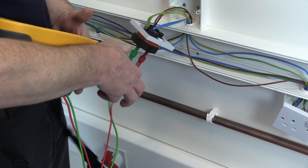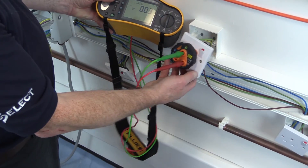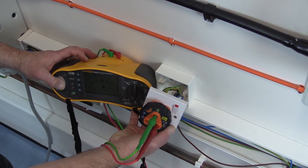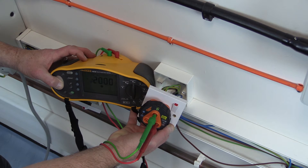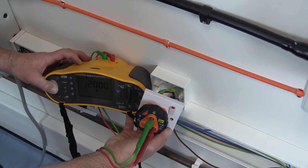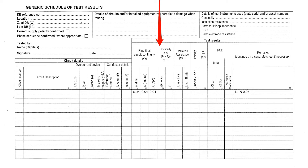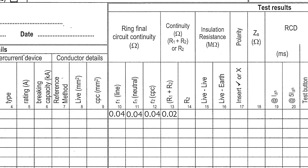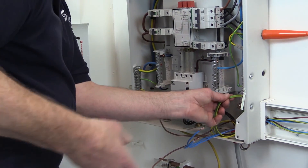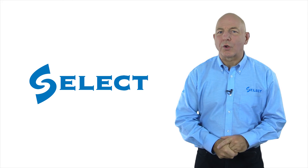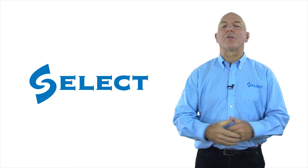Where a defect or omission is discovered during the inspection or test process, it shall be made good and the test repeated to obtain a satisfactory outcome before proceeding further. On completion of step three, the value obtained should be recorded in the relevant column of the schedule of test results as the R1 plus R2 of the ring final circuit, which is the effective midpoint of the circuit. Finally, remember to reinstate the circuit on completion of the test. That concludes this video on continuity of ring final circuits — watch the next in the series on insulation resistance.